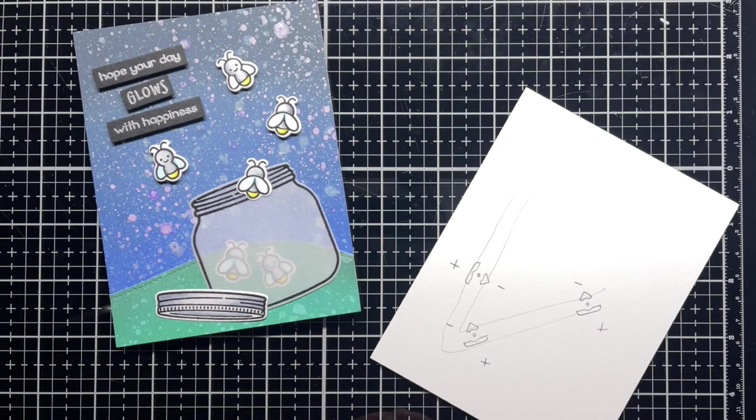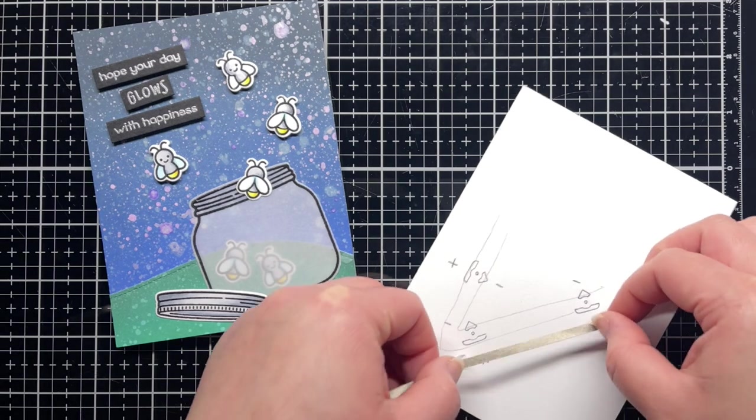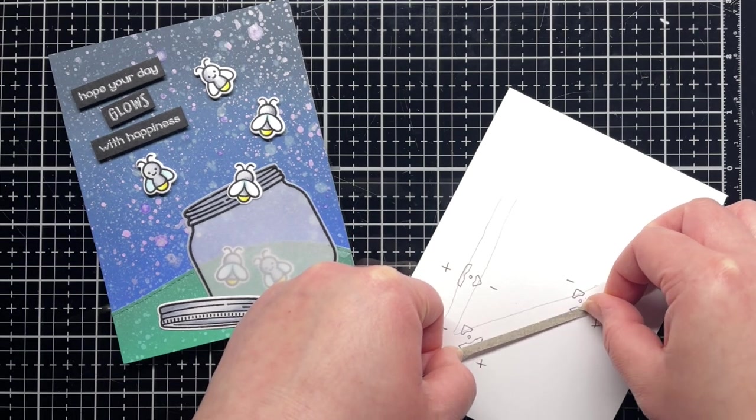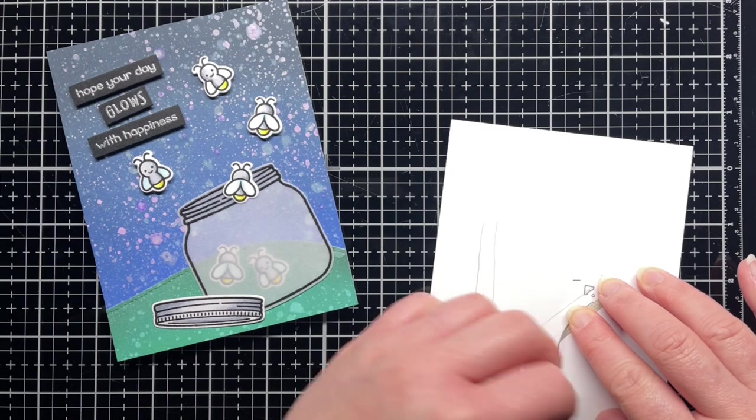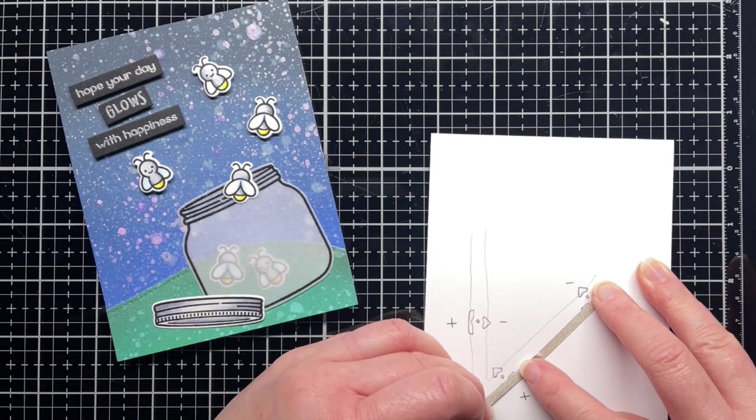I draw a line connecting the negative points of each sticker to each other in one continuous line. Sketching in your circuit with a pencil allows you to make sure everything is correct before you start laying down tape.